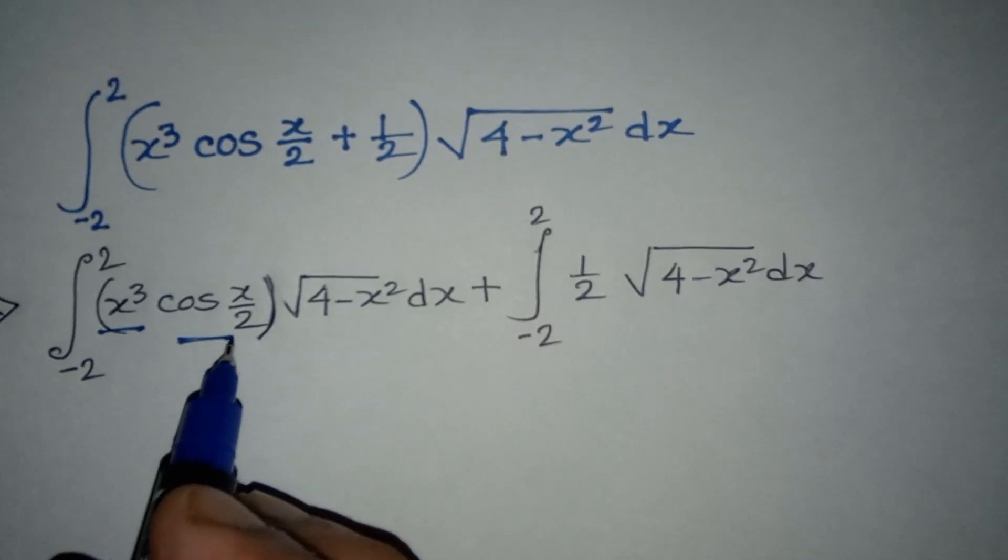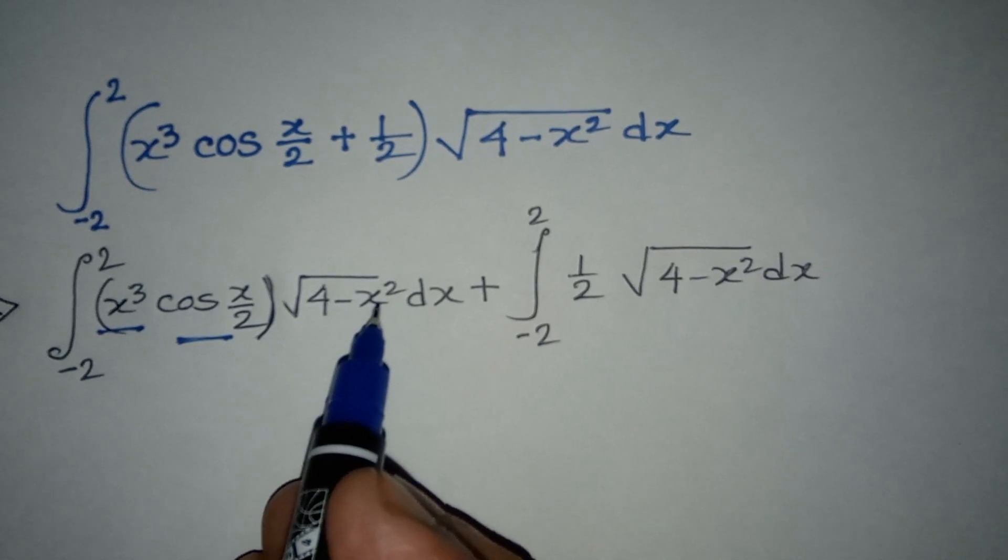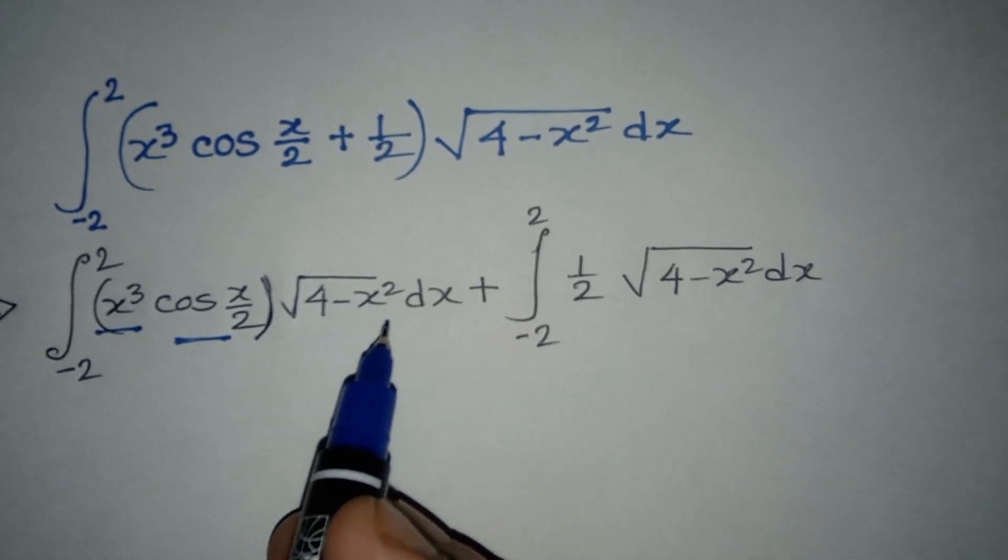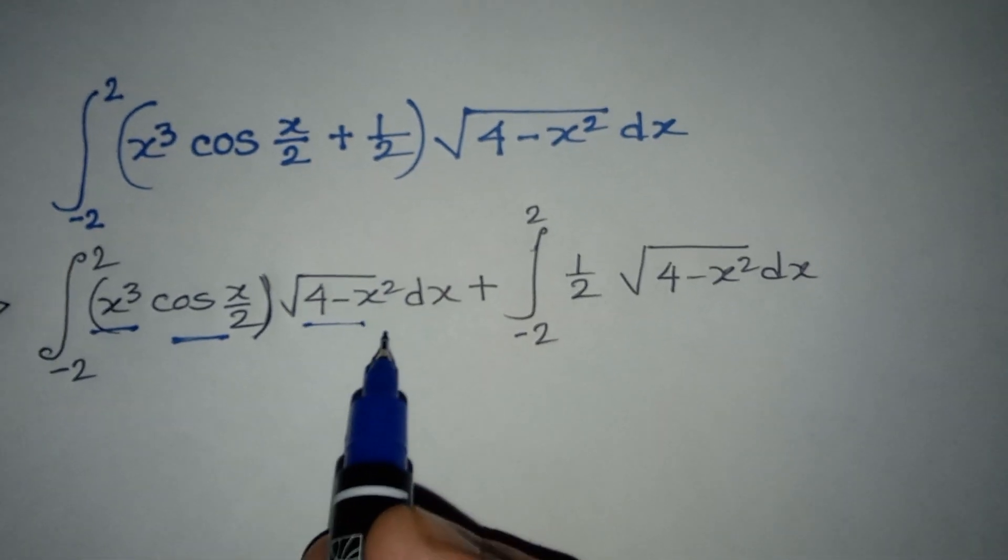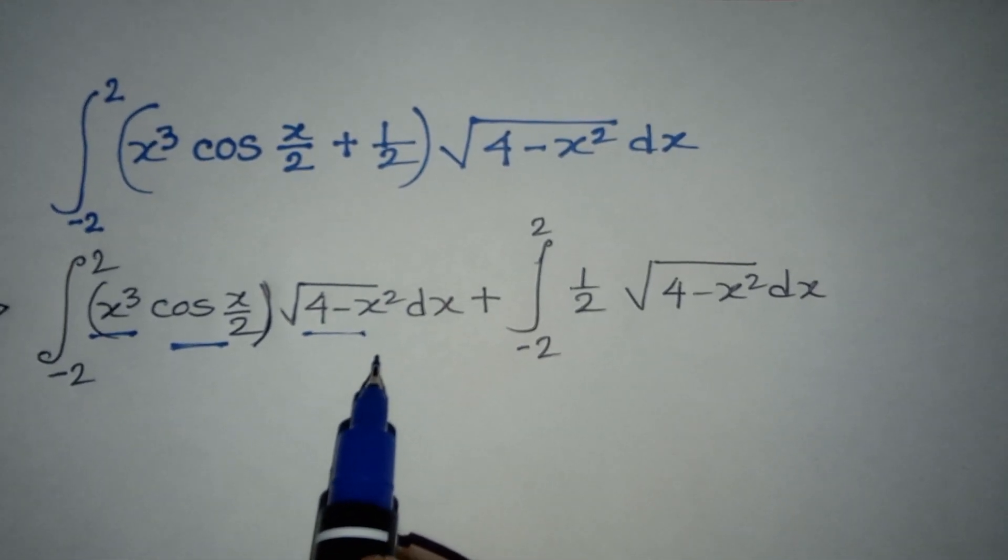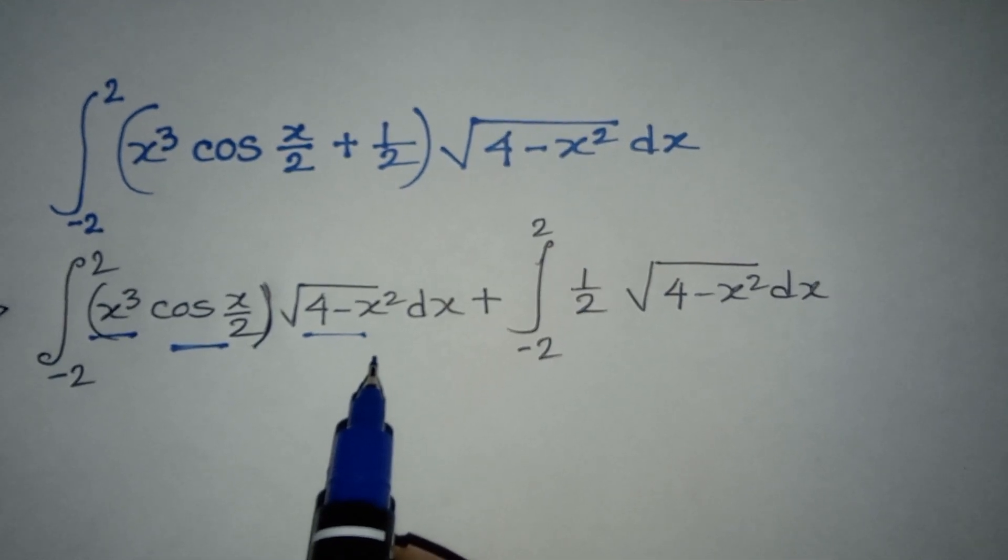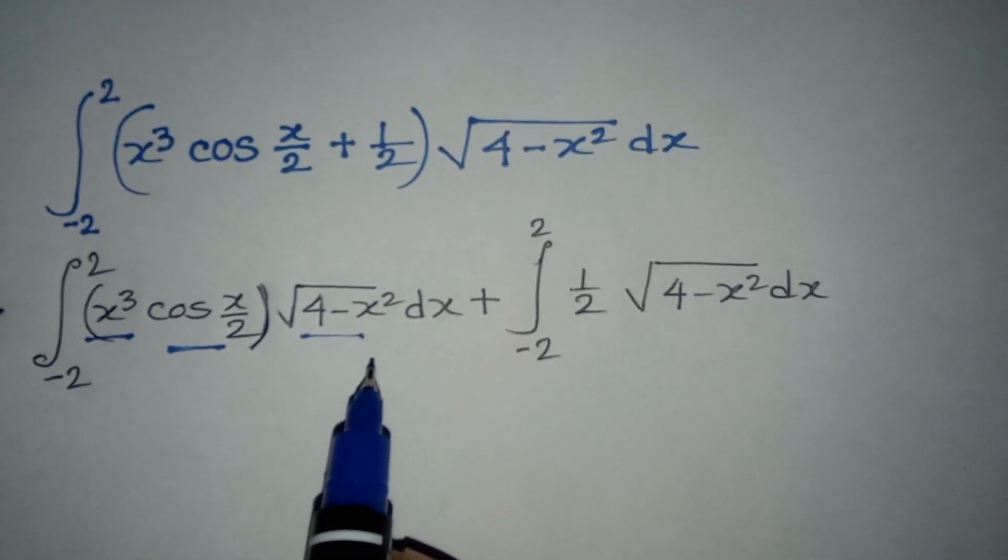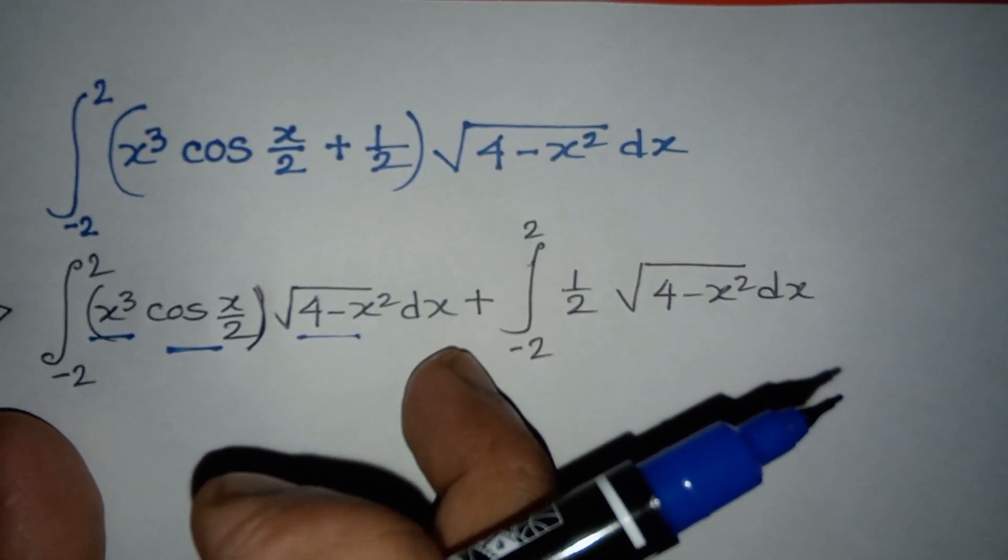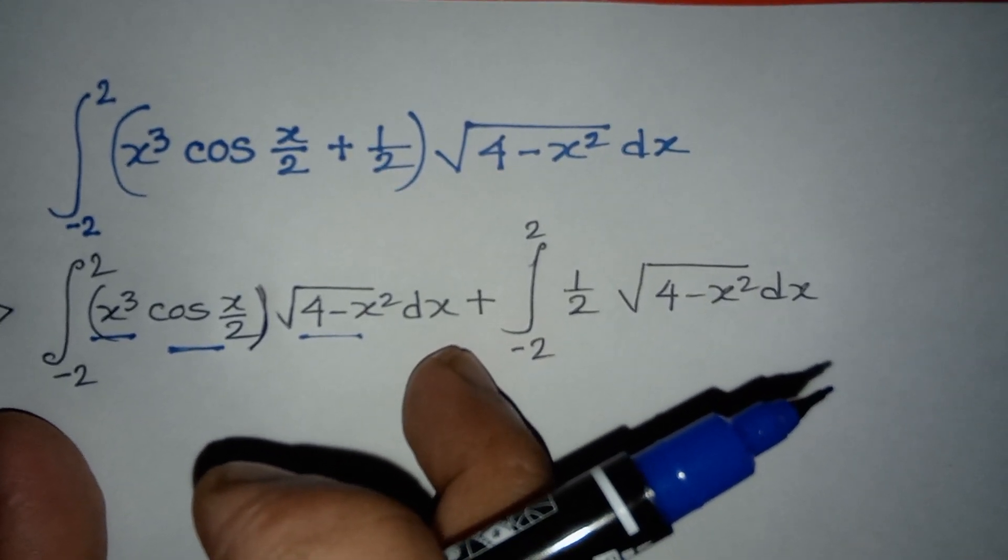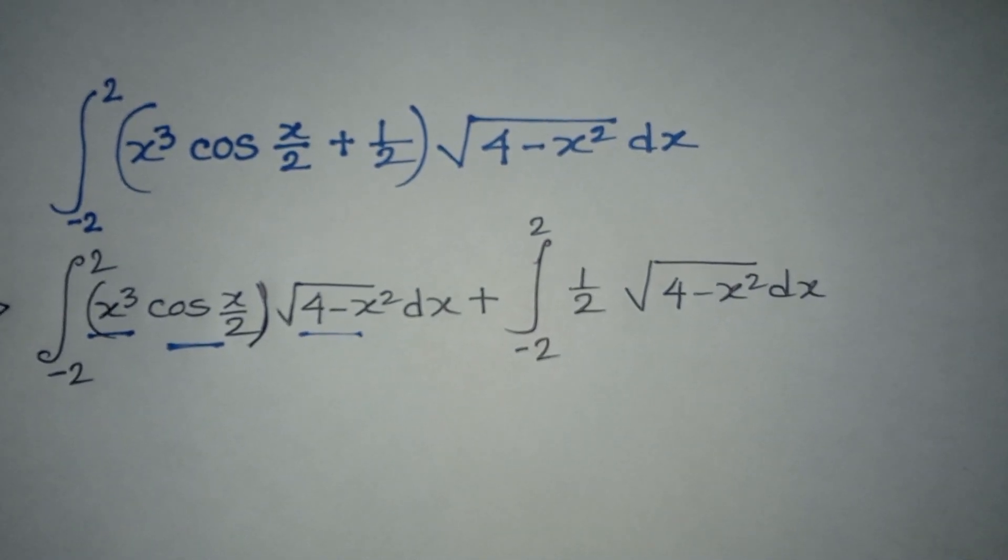So odd multiplication even multiplication even is odd. Overall, this function is odd. This part is an odd function.